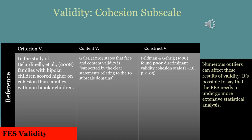In this case, it's measuring cohesion in terms of family environments. In the study of Feldman and Gehrig, they found poor discriminant validity for the cohesion subscale, hinting that there is a statistically insignificant relationship between test scores. With criterion and content validity being validated but construct validity not, this proves there are some challenges in how statistically significant results actually appear. Possible outliers can affect these results and more extensive statistical analysis may be needed.